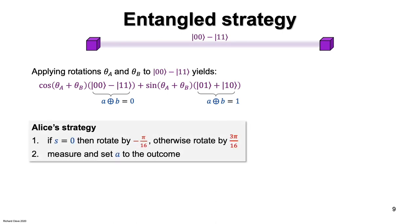Alice's strategy is to look at her input bit s, and if s is 0, she applies a rotation by minus pi over 16. If s is 1, she applies a rotation by 3 pi over 16. Bob's strategy is similar with respect to his input t.